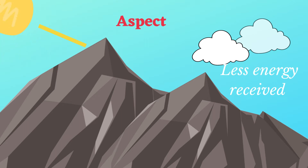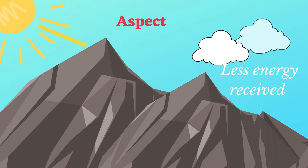Aspect is the direction that a place faces. Hillsides can alter the angle at which the sun's rays hit the surface. Slopes which face the sun directly will receive more radiation than those which are in the shadow of higher slopes or which are turned away from the sun.